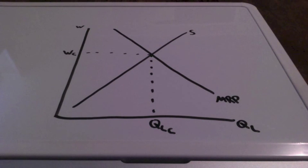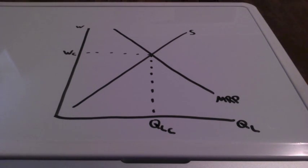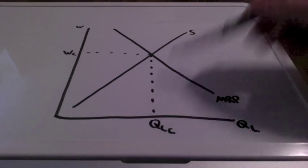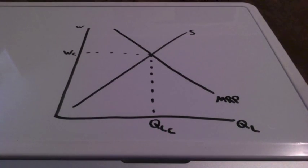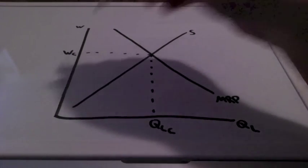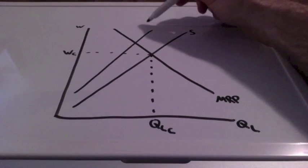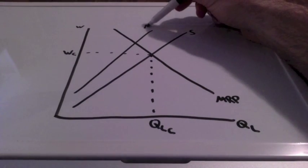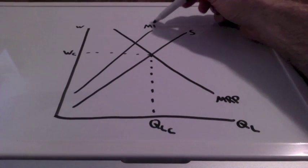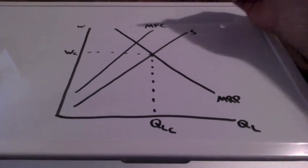This intersection where supply and marginal revenue product meet represents the competitive wage and the competitive quantity of labor. By 'C' in competitive, we're referring to the socially optimal level. Will the monopsony hire at this quantity and pay this wage? The answer is no, because of the marginal factor cost curve.